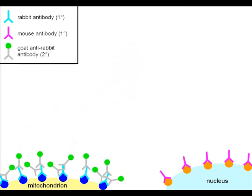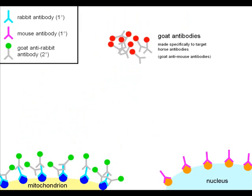The secondary antibodies for the nucleus were also made in goats, but they were made specifically to target mouse antibodies, so the two sets of secondary antibodies don't mix and end up on the primary antibodies of the wrong organelle.